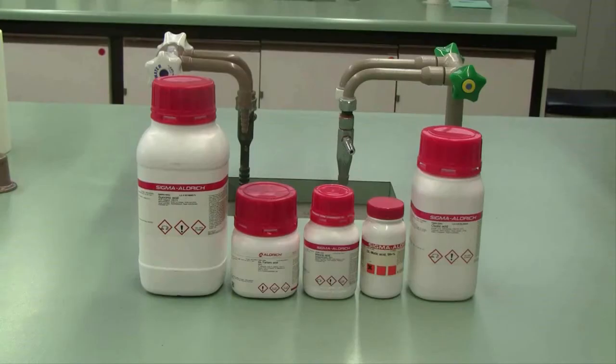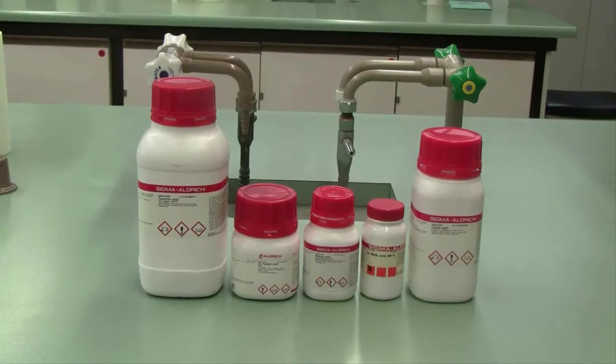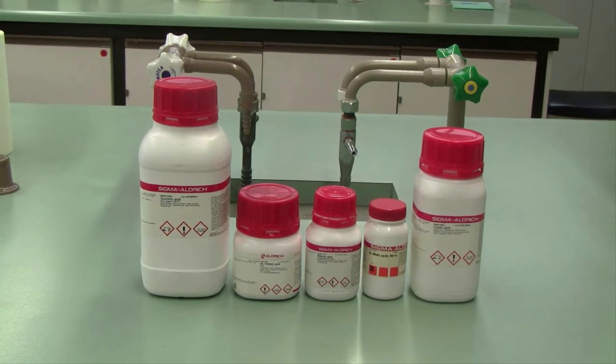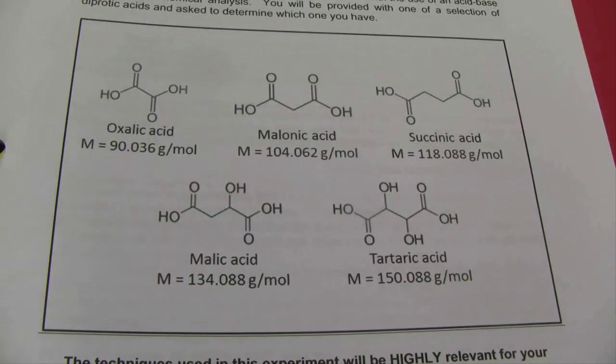You're going to be given an unknown diprotic acid. It's going to be your job to determine which one of these five diprotic acids you've been given. I've given you the molecular formula and the molar mass of each one, but you'll be determining which one and you'll be doing it by titration.